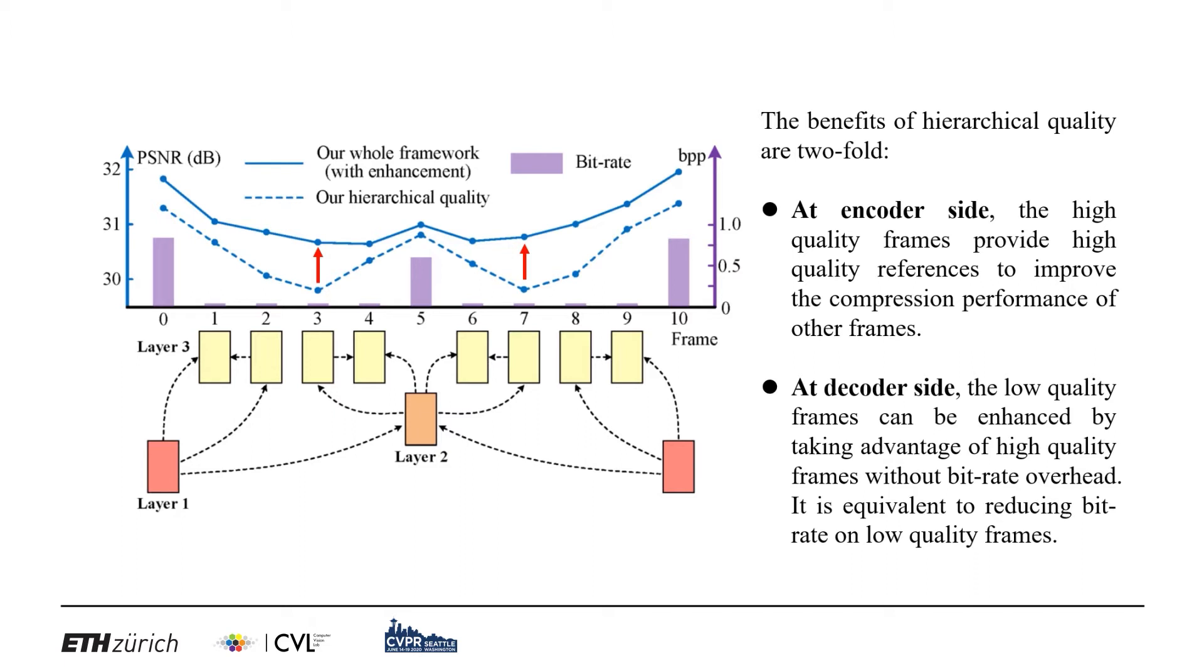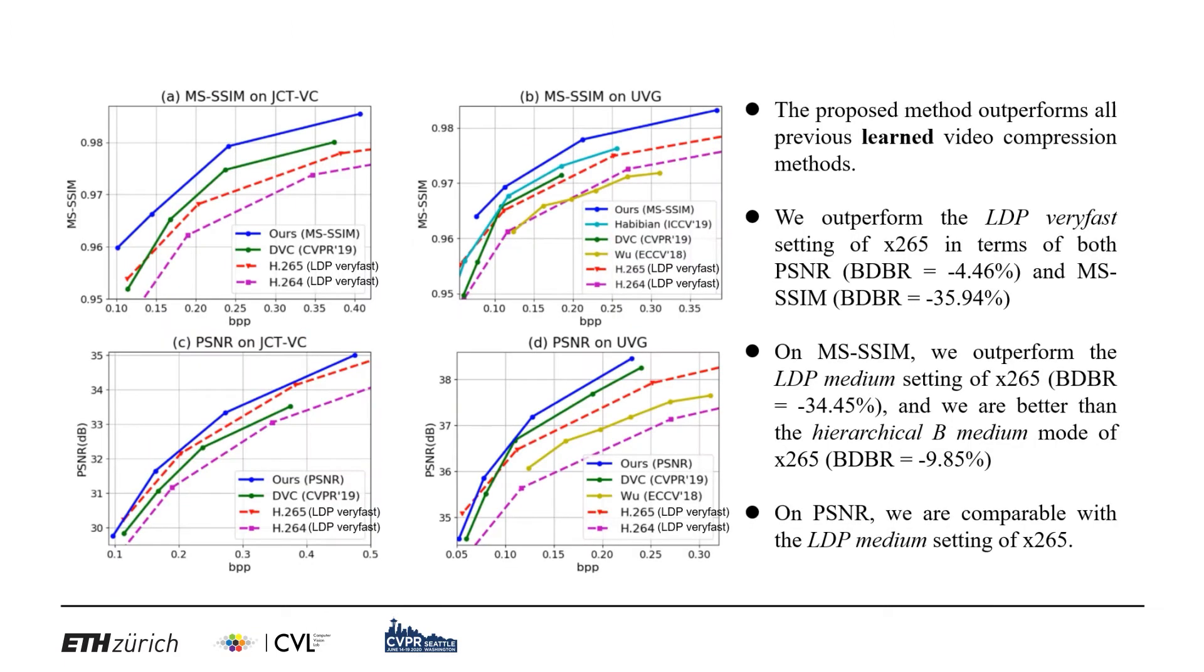At the decoder side, the low-quality frames can be enhanced by using the advantageous information in high-quality frames, without bitrate overhead. This results in efficient video compression. The proposed approach outperforms the existing learned approaches and the LDP very-fast mode of X265 in terms of both PSNR and multiscale SSIM.